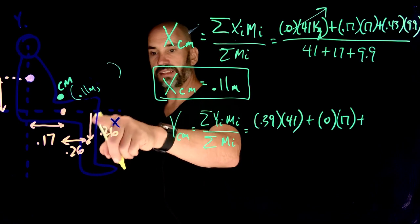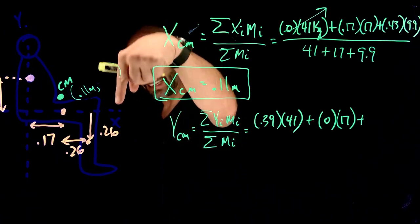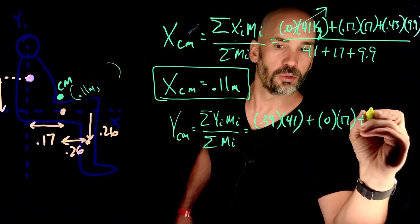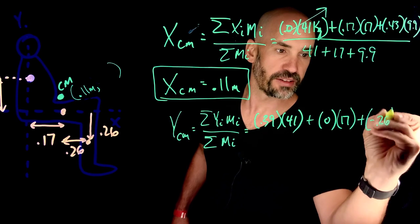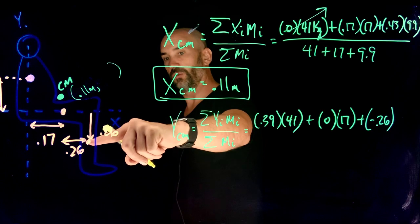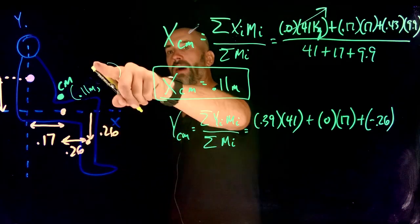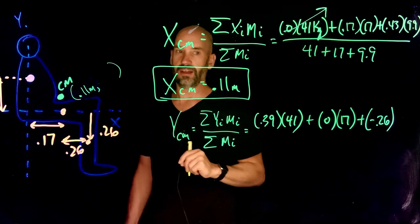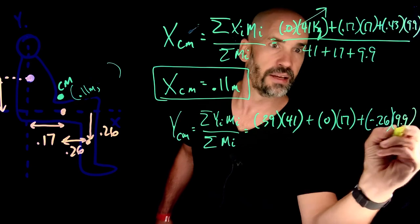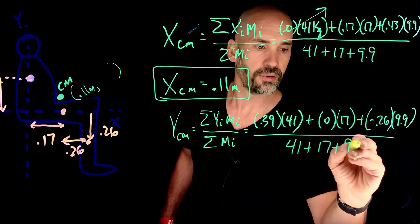Plus, what is the y coordinate of the lower leg? Well, it's negative, it's below the x-axis, negative 0.26. So I'm going to do negative 0.26. That's important. Signs are important here because your center of mass is going to be very different whether it's negative 0.26 or positive 0.26. That's going to definitely change the center of mass of an object. And the mass of the lower leg is 9.9. And all these together is 41 plus 17 plus 9.9.